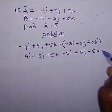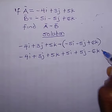Next, collect like terms: minus 4i plus 5i, plus 3j...